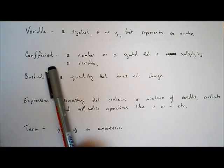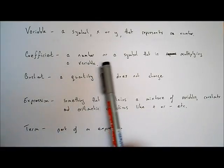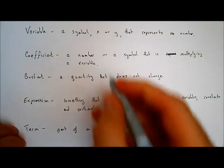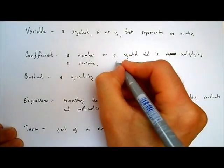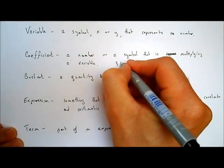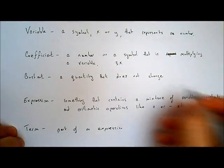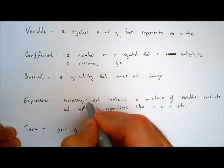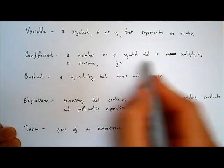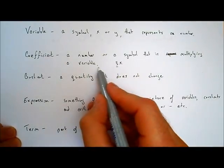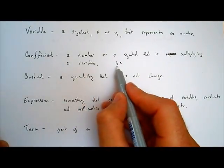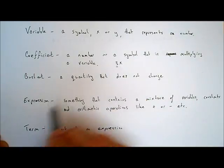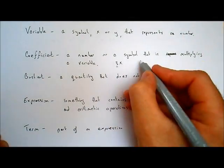A coefficient is a number or a symbol that is multiplying a variable. For example, if I write down something like 3x, we would say the coefficient of x is 3. It's a number or a symbol that's multiplying a variable — we're multiplying 3 by the variable x, so the coefficient of x is 3.